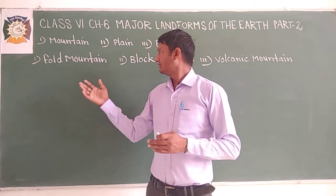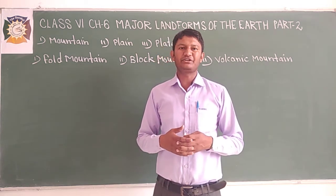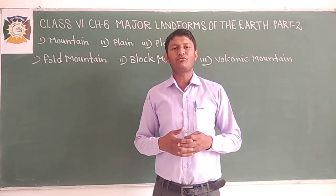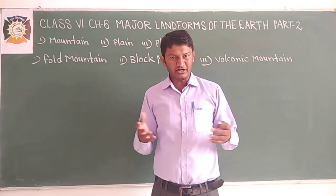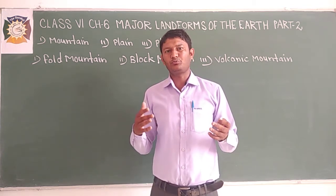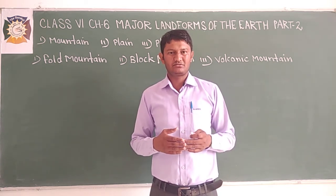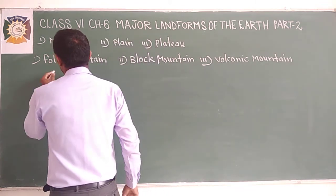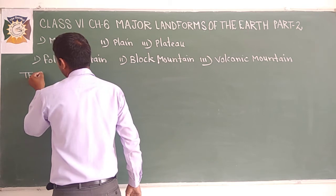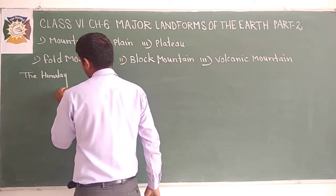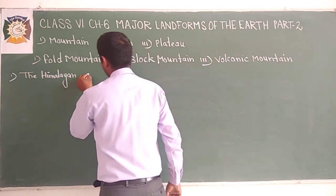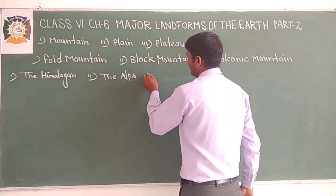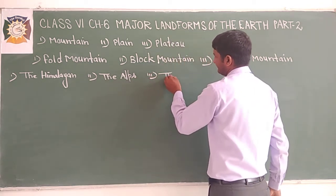Let us begin with fold mountains. Dear students, the Himalayas are the young fold mountains of the world. They have different conical peaks and the loftiest peaks in the world, like Mount Everest, whose height is 8,848 meters. The first example is the Himalayas, the second is the Alps, and the third is the Andes.